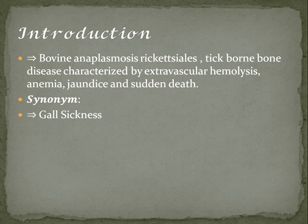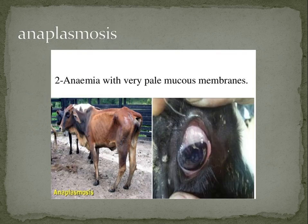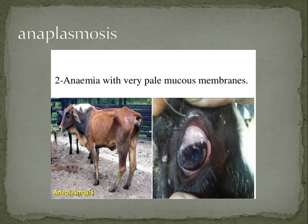It is characterized by extravascular hemolysis, anemia, jaundice, and sudden death. It is synonymous with gall sickness. Anaplasmosis is characterized by anemia with pale mucous membrane. Here you can see on the left side a very emaciated cattle surely infected by anaplasmosis, and on the right side the pale mucous membrane of the eye of the cattle.